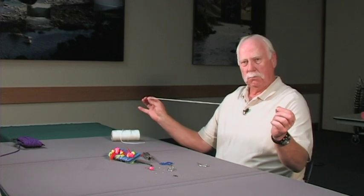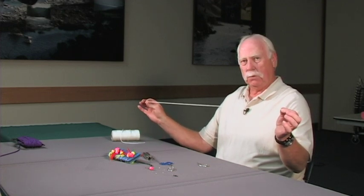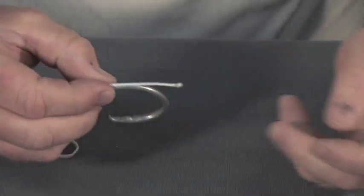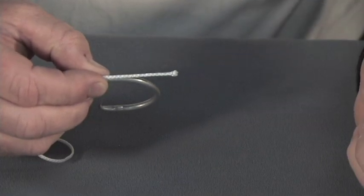First, take a piece of leader, whatever length you want—2, 3, 4 feet, whatever your needs require. Bring the end up through the eye of the hook and along the shank so it comes to about the end of the hook.